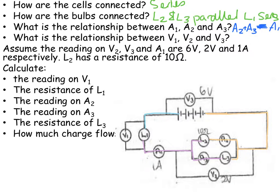What is the relationship between V1, V2 and V3? What we notice is that V2 is over the parallel network, V1 is over the other bulb, and then those two together are going to equal V3, so we can say V3 is equal to V1 plus V2.